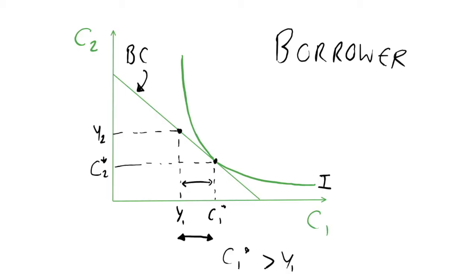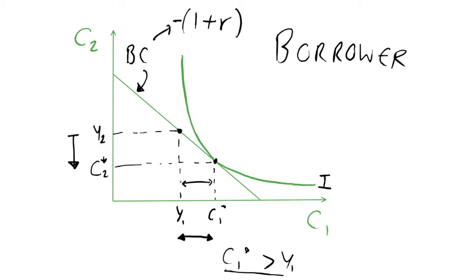The borrower spends more than y1 in period 1, which means they must spend less than their period 2 income in period 2. They borrow at interest rate 1 plus r, so consumption in period 2 is lower by (1 plus r) multiplied by the excess consumption over income in period 1. This is the diagram representing a borrower.